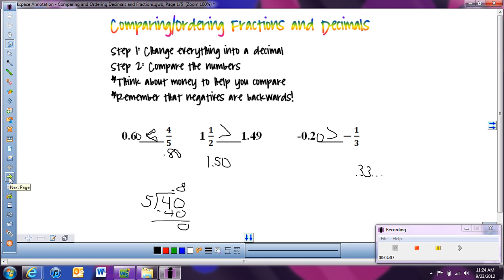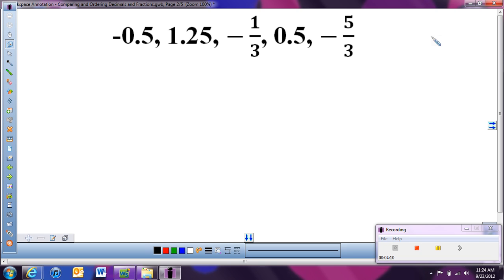Now, we're just going to take this one step further and have a list of numbers, decimals and fractions, and we're going to put them in order from least to greatest. So just like we did before when we were comparing two fractions or two decimals or one of each, this time let's change them all into decimals to start with, and then we'll put them in order.